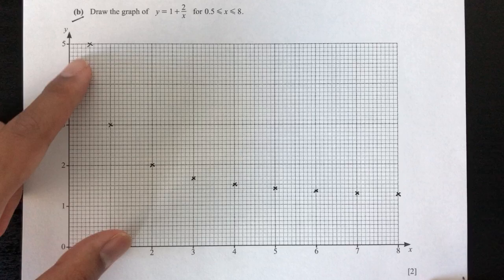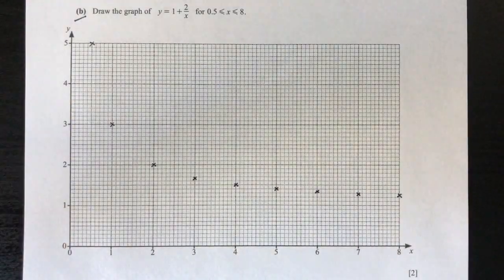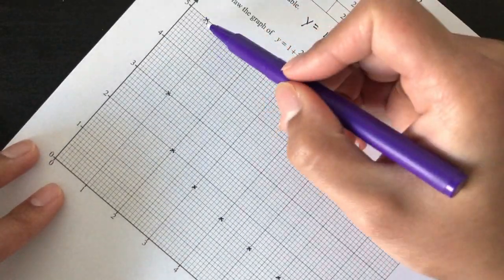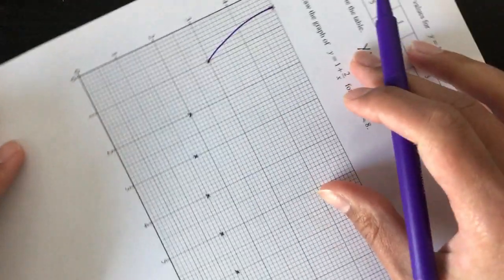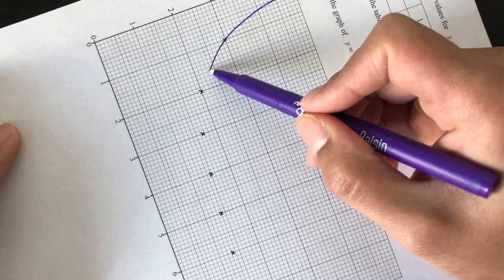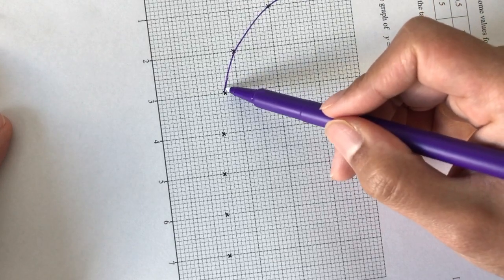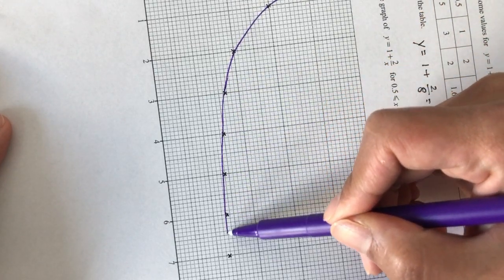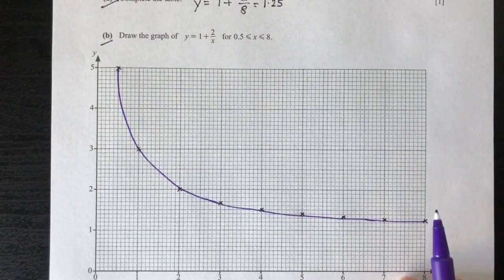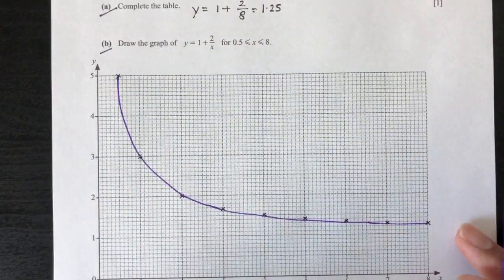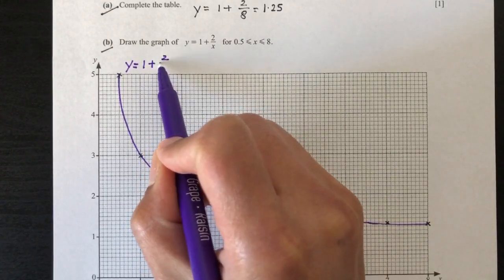So as you can see, we have all those points. We have to join them with a smooth curve for your answer. So let's try to do that as best as we can. Make sure that the curve passes through all your points properly and make it as smooth as possible. It is very important for your question that comes right afterwards. This is your y = 1 + 2/x.